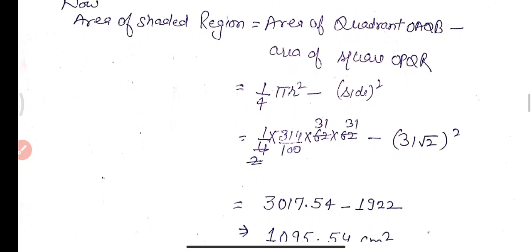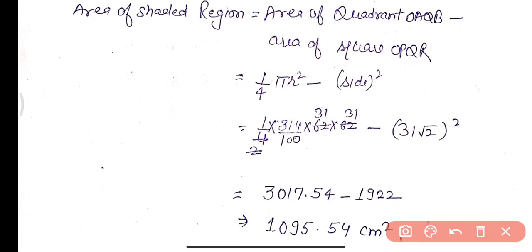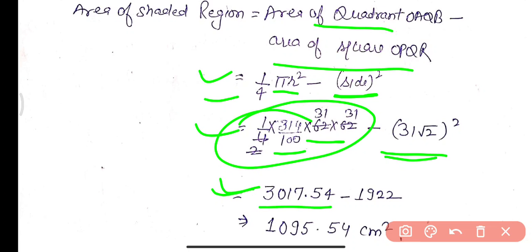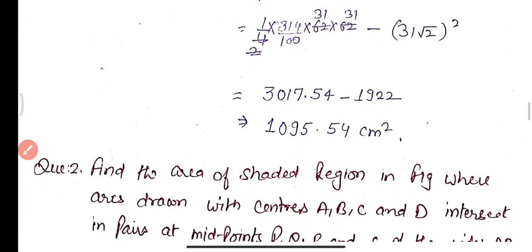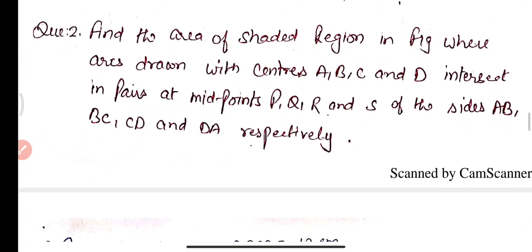Area of shaded region = Area of quadrant OAQB − Area of square OPQR. Area of quadrant = (1/4) × πr² = (1/4) × 3.14 × 62² = 3017.54 cm². Area of square = (31√2)² = 1922 cm². Area of shaded region = 3017.54 − 1922 = 1095.54 cm².